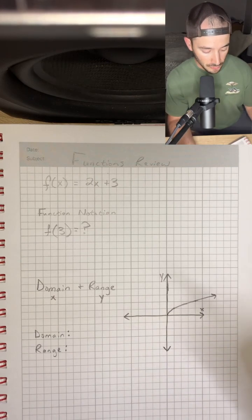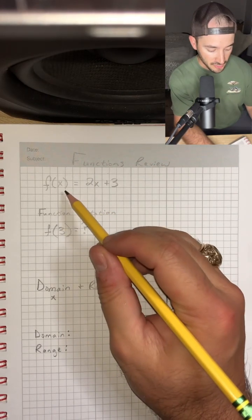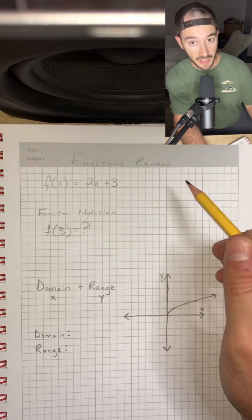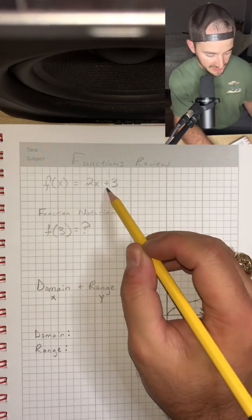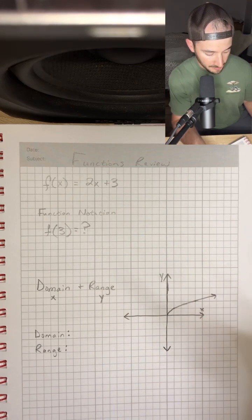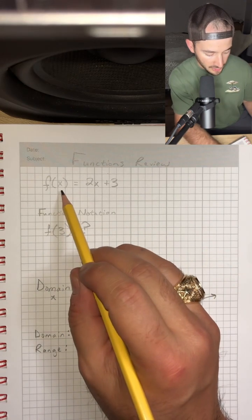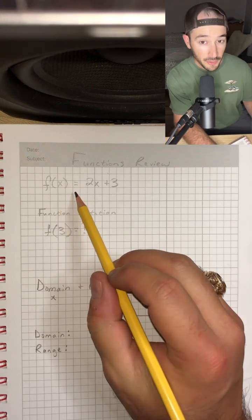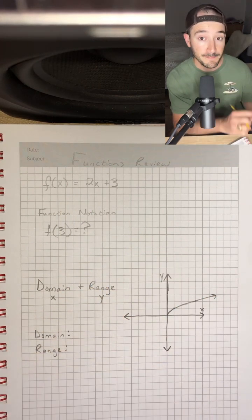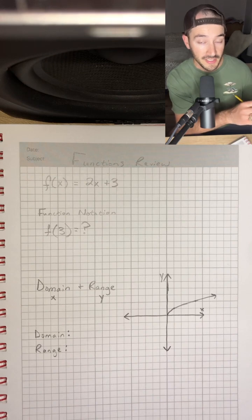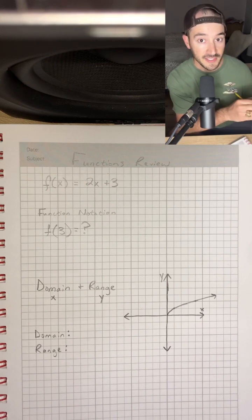So a function is just some rule where if you plug in an x value, you should only get one y value. So for instance, if we have f of x is equal to 2x plus 3, that would be a function, because no matter what number we plug in for x, it's only going to give us one answer in return, kind of like a vending machine. So if you press B1 on a vending machine, it should give you the same snack every single time.